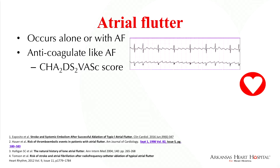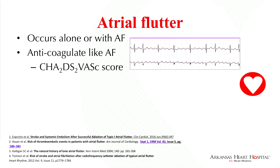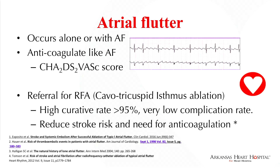A cousin of atrial fibrillation is atrial flutter, which is familiar to everybody — a saw-tooth pattern, treated and anticoagulated much like atrial fibrillation. As an electrophysiologist, the procedure for atrial flutter has a very high curative rate — about 95% at a 20-year interval with a complication rate of less than 1%. If flutter exists alone without atrial fibrillation, which occurs about 50-60% of the time, there's also been a decrease in stroke risk and the need for anticoagulation.